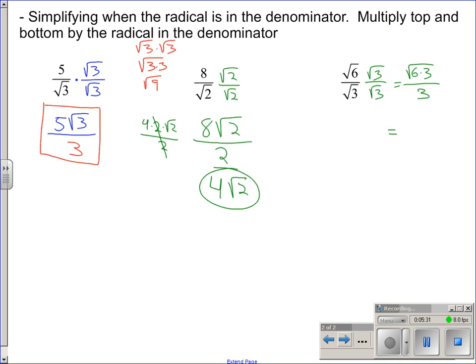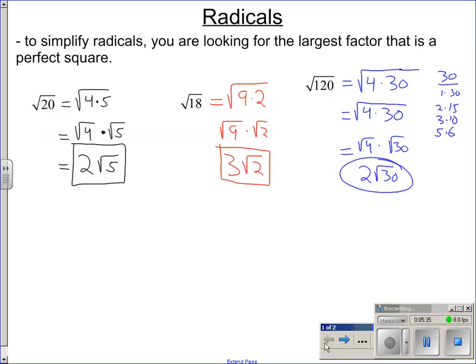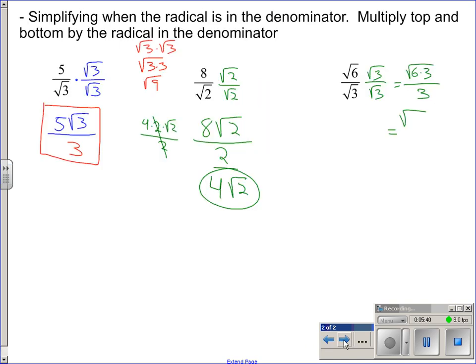6 square root of 3 is 18. Well, we just did the square root of 18 on this page. It's 3 square root of 2 divided by 3. Those 3's cancel out. We just have square root of 2. That is our answer.